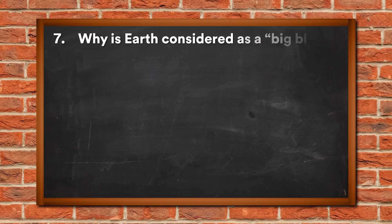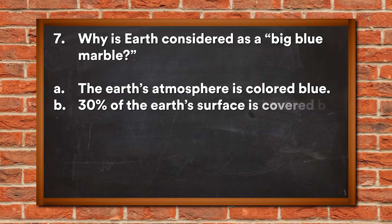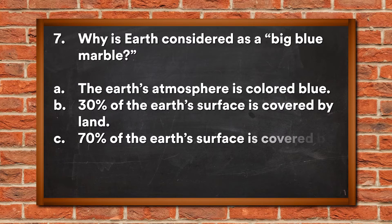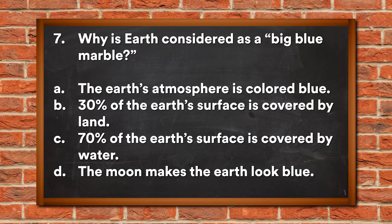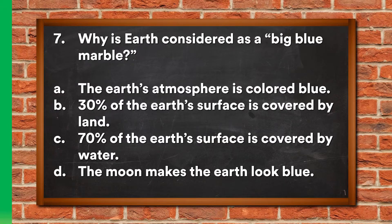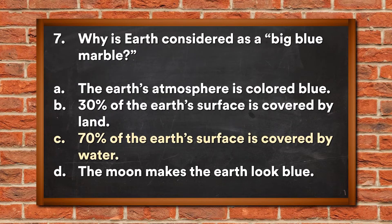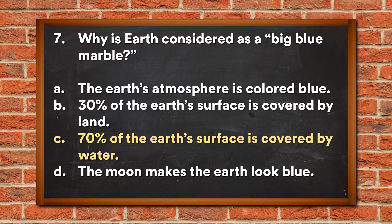Question 7: Why is earth considered as a big blue marble? A. The earth's atmosphere is colored blue, B. 30% of the earth's surface is covered by land, C. 70% of the earth's surface is covered by water, D. The moon makes the earth look blue. The answer is C, 70% of the earth's surface is covered by water.